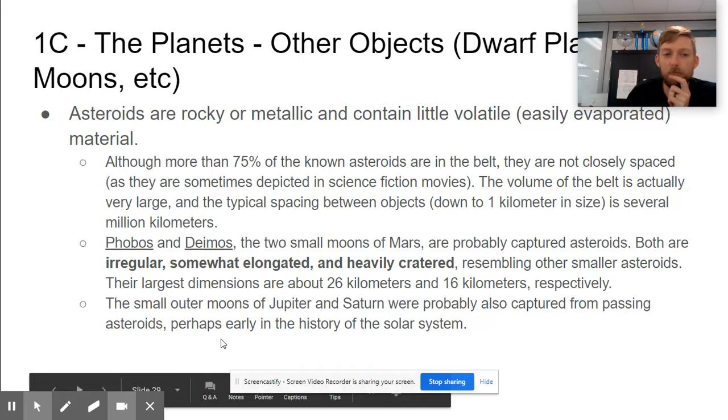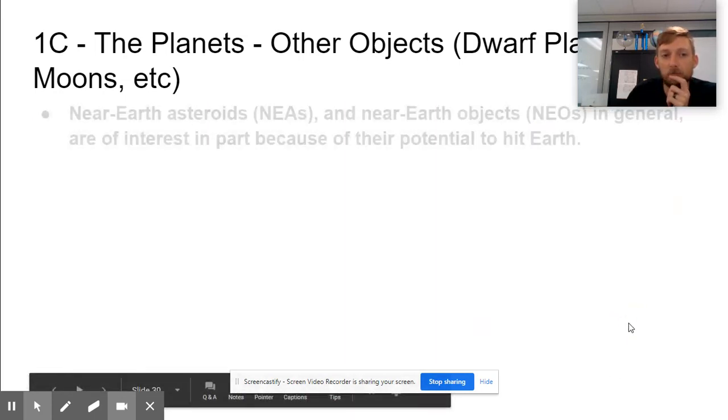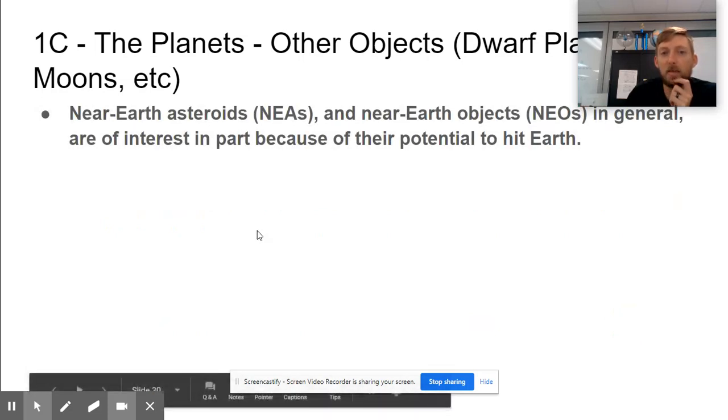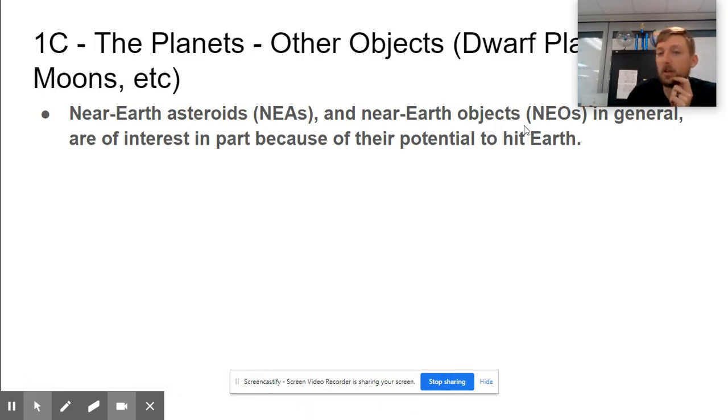There are a lot of moons in Jupiter and Saturn that are probably similar—other passing asteroids that have just become part of their system. Now we have near-Earth asteroids, NEAs, and near-Earth objects, NEOs.